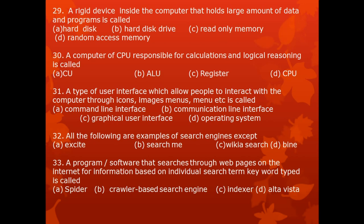Question 30. The part of a computer CPU responsible for calculations and logical reasoning is called: A. CU — Control Unit, B. ALU — Arithmetic Logic Unit, C. Register, D. CPU — Central Processing Unit.